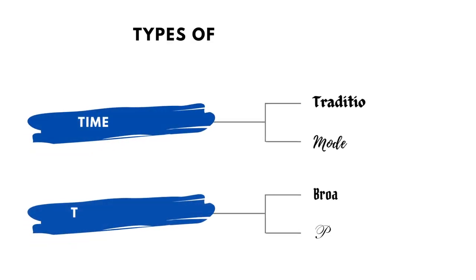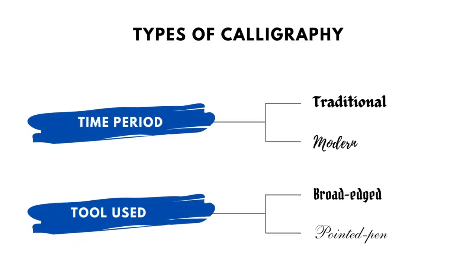Based on my understanding, there are two ways to classify calligraphy. First is the time period from which the calligraphy script comes and how rigid the set of rules one follows to write the script — this can be divided into traditional and modern calligraphy styles. Second is the calligraphy tool used to write the script, which can be divided into broad-edged and pointed pen calligraphy.